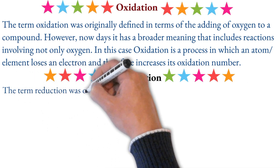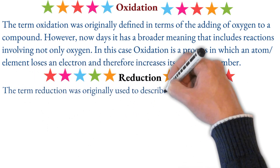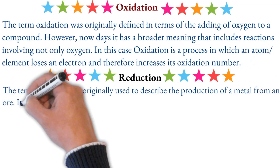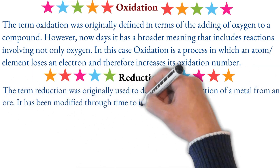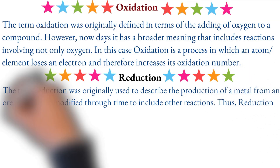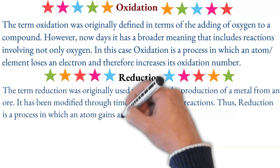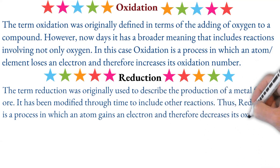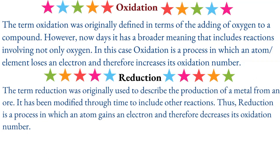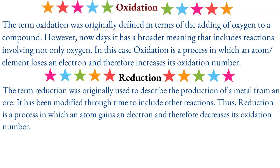The term reduction was originally used to describe the production of metal from an atom. It has been modified through time to include a broader meaning. Reduction is the process in which an atom gains an electron, and therefore there is a decrease in its oxidation number.